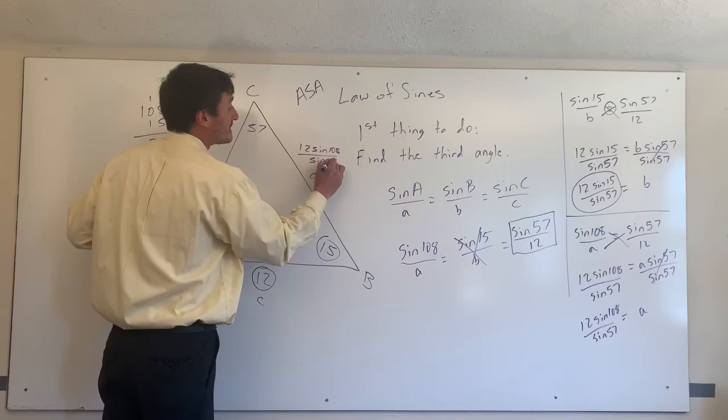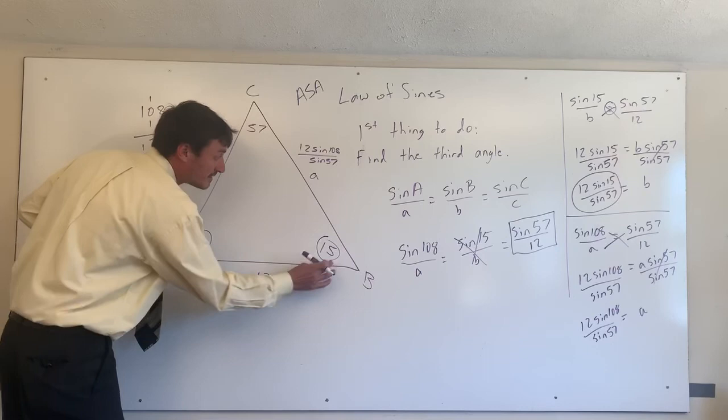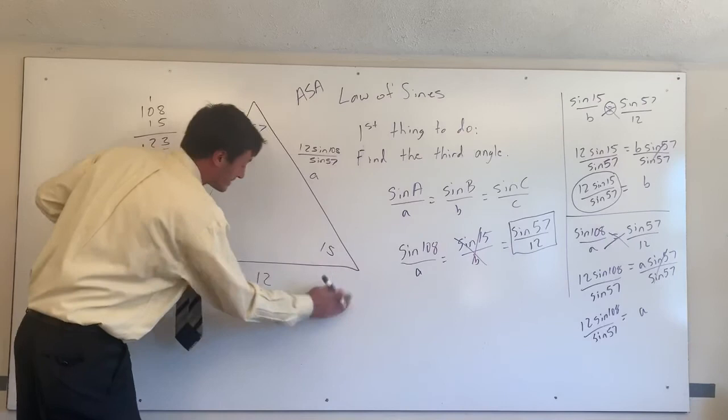And now you have successfully found all sides and all angles of the triangle. Erasing the variables. And you can see we have all three angles and we have all three sides. Have a wonderful day, guys.